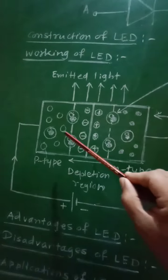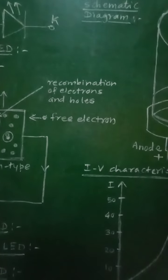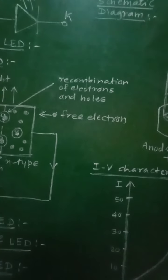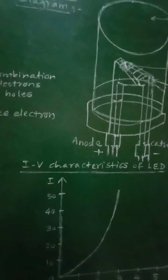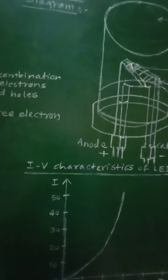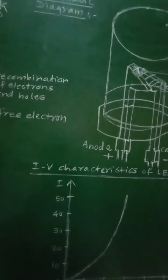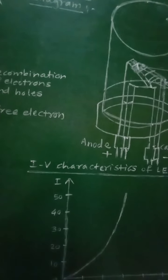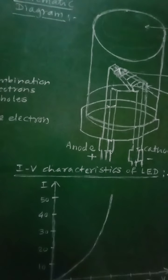The LED PN junction is enclosed in a dome-shaped transparent case so that the light emitted is spread uniformly in all directions. Due to this dome-shaped transparent case, internal reflection of the light emitted from the PN junction is minimized.